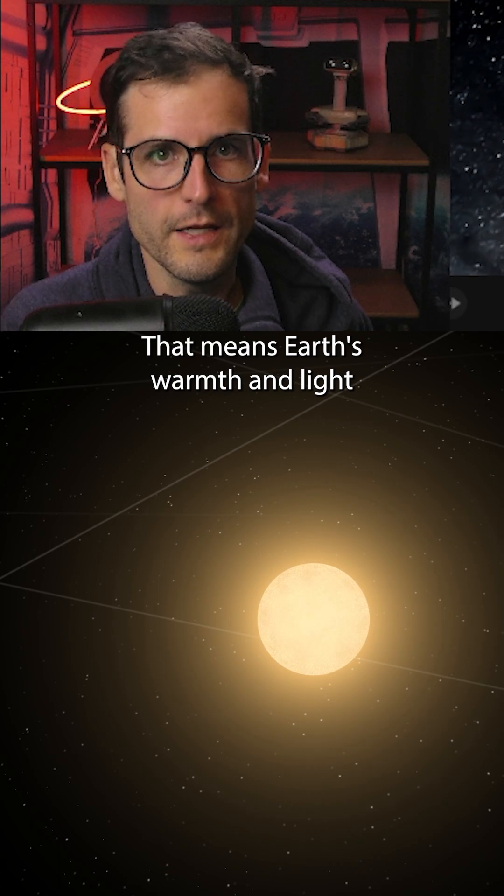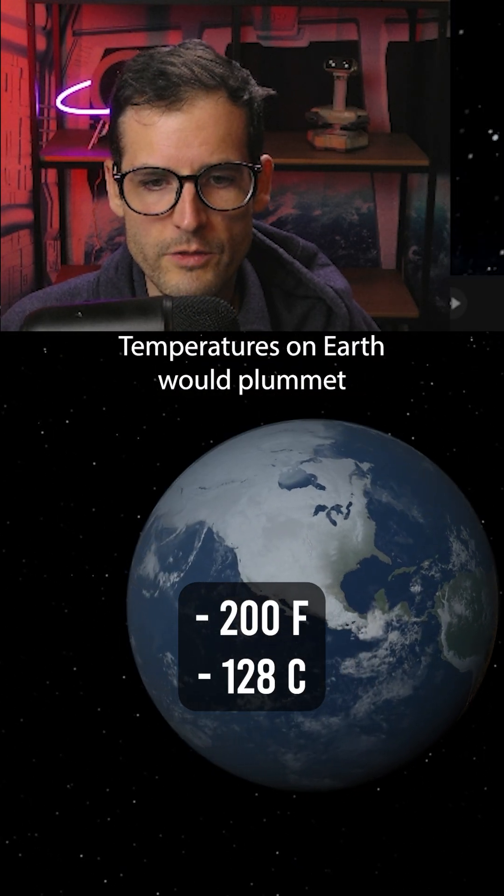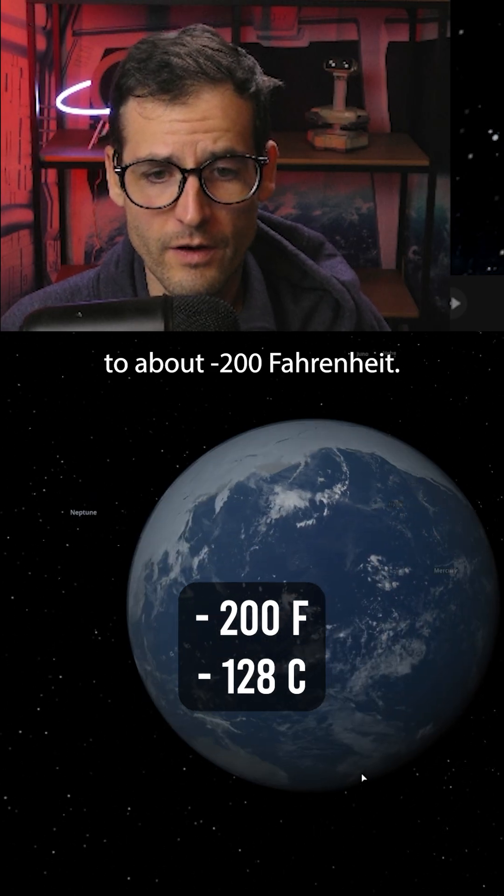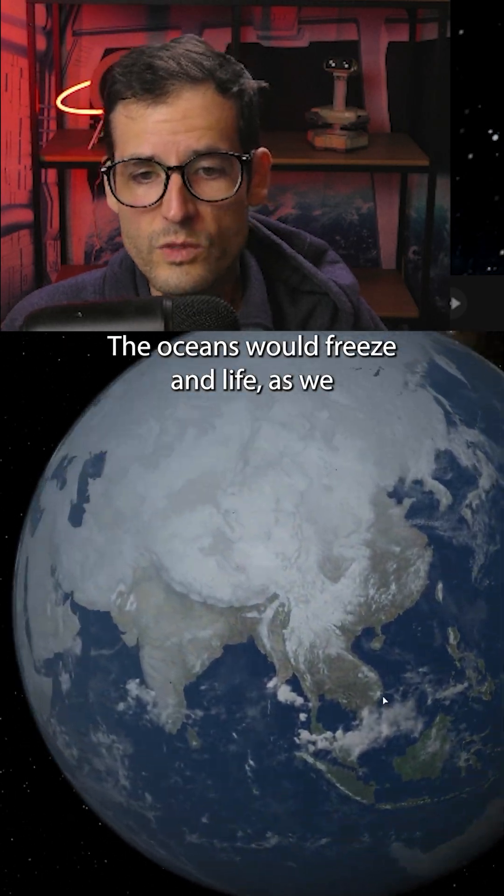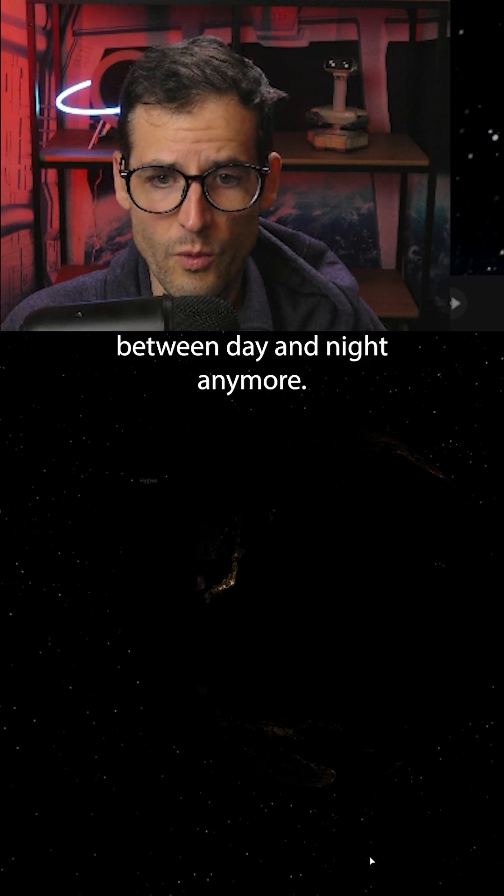That means Earth's warmth and light are about to change dramatically. Without the sun's heat, temperatures on Earth would plummet to about minus 200 Fahrenheit. The oceans would freeze and life as we know it would not survive. Not to mention, you couldn't even tell the difference between day and night anymore.